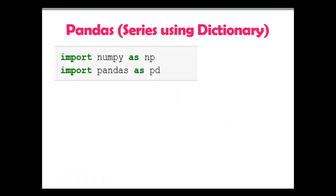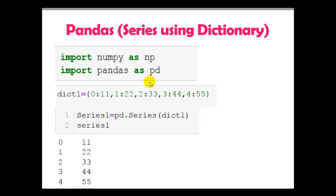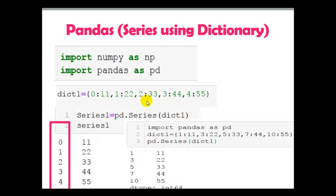Pandas series using a Python dictionary. Again numpy as np and pandas as pd are imported. I have created a Python dictionary with variable dict1. A dictionary is key-value pairs — here 0, 1, 2, 3 and 4 are keys and 11, 22, 33, 44 and 55 are values. Passing dict1 to the Series method, the pandas series is created. Note that the keys become the indexes of the pandas series. In another example using 1, 3, 5, 7 and 10 as key values, those key values become the indexes of the series.